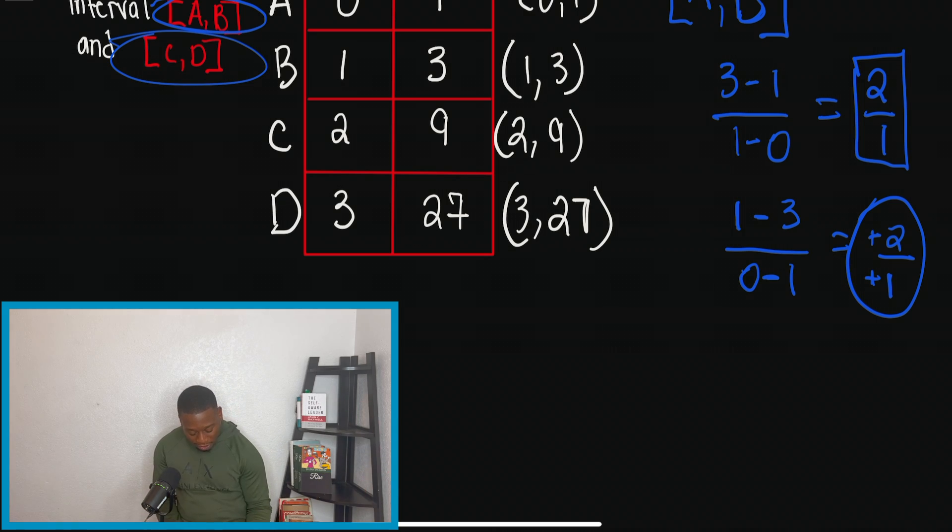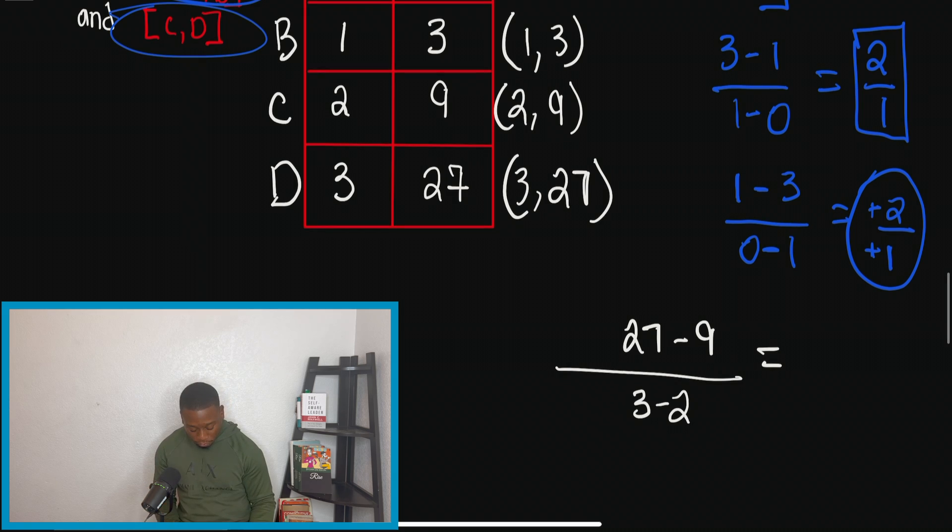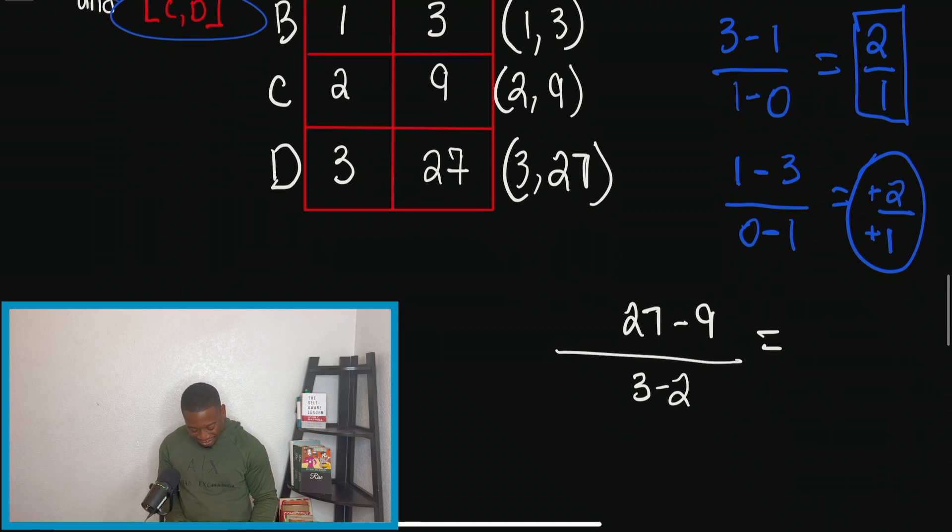So we're going to do CD. And I'm going to switch back to white now. So with CD, we have nine. Oh, I'm sorry. I'm doing CB. Let's stop. We're doing 27 minus nine divided by three minus two. So now we're getting the interval for this particular interval, the answer, the rate of change for this interval. And what we're going to get is 18 over one.